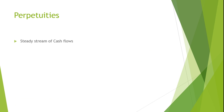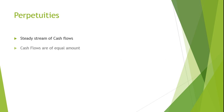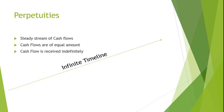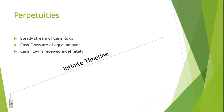A perpetuity is a steady stream of cash flows of equal amounts that are to be received or paid indefinitely. A perpetuity is a form of an ordinary annuity and is sometimes called a perpetuity annuity.